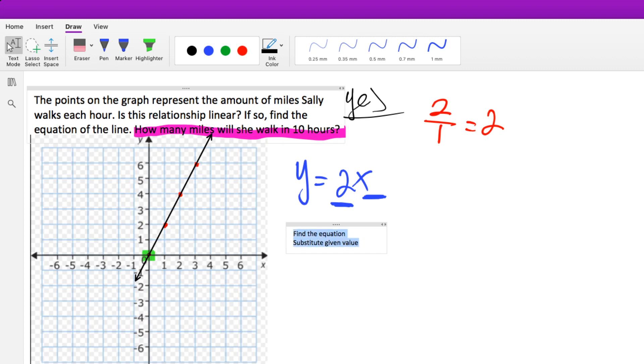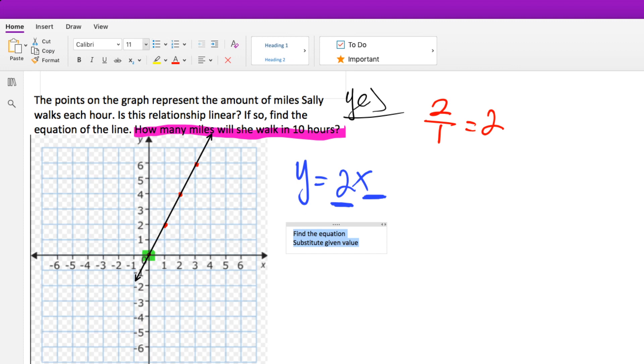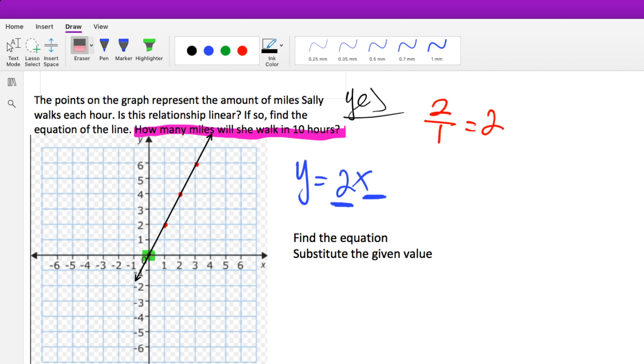Let me make this a little bigger. So, step one is find the equation. Fortunately, we already did that. And step two is substitute the given value. What is our given value in this example? We are asked, how many will she walk in 10 hours? So, we just need to plug in 10 for X. 2 times 10 gives us 20.